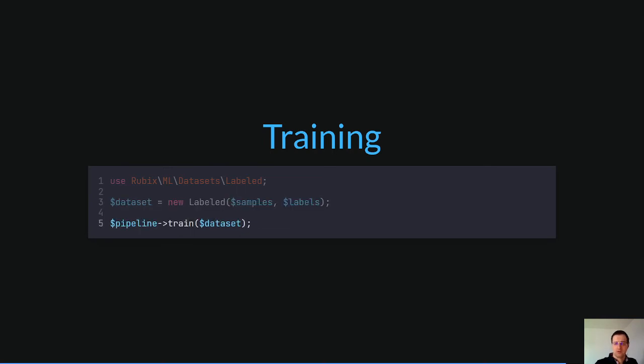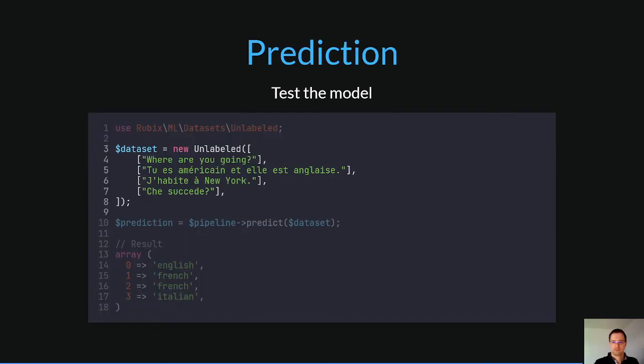Then we call the train method of the pipeline object with the labeled dataset. Now our model is trained and we can try to predict something with it. Here we have an example. I will explain it step by step.